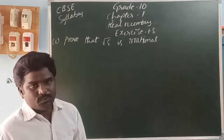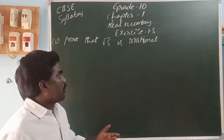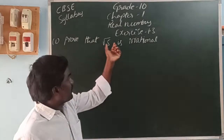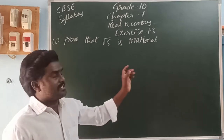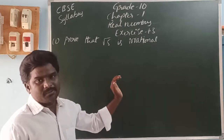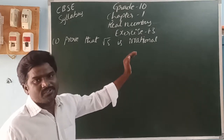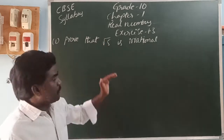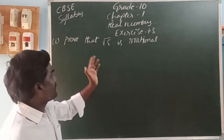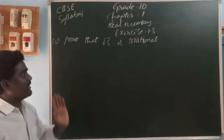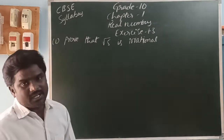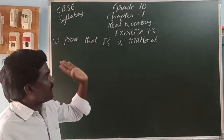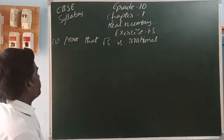We know that the root 5 value is 2.236 and so on. We can get this by using the long division method. So it is an irrational number, but they are asking us to prove it by using the theorem.